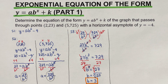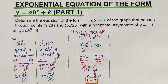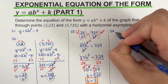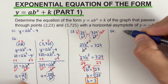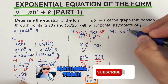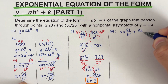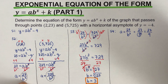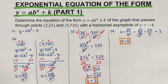Step 4: solve for a using any of the equations from step 2. Using a equals 27 over b²: substituting b equals 3 gives a equals 27 over 3², which is 27 over 9, which equals 3. So our a value is 3.